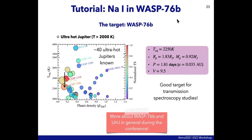The tutorial focuses on the sodium lines in WASP-76b, an ultra-hot Jupiter with temperatures higher than 2000 Kelvin. We currently know around 40 ultra-hot Jupiters. WASP-76b is one of the lowest density ultra-hot Jupiters, making it a good candidate for transmission spectroscopy studies.